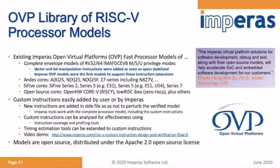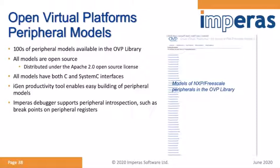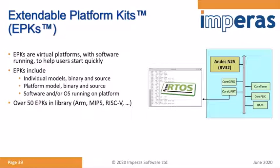The library of peripheral components extends to a rich set of elements you can integrate around processors as you build your full system. We've developed a number of reference platforms called EPKs — Extendable Platform Kits — which are flexible, modifiable reference designs. Here's an example showing an Andes N25 supporting a FreeRTOS bring-up.